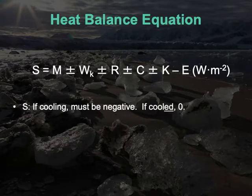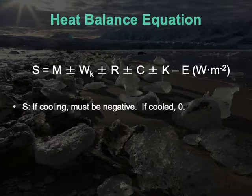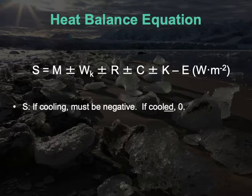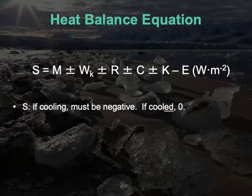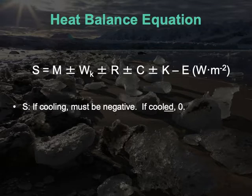If we are cooling, heat balance is negative — heat is flowing out of the body. If we are out there for a long period and have already reached our cold core temperature, heat flow S is zero: we're at steady state. This was the catching point in the midterm — the question assumed steady state, meaning no change in heat balance, so the sum of all terms equals zero.